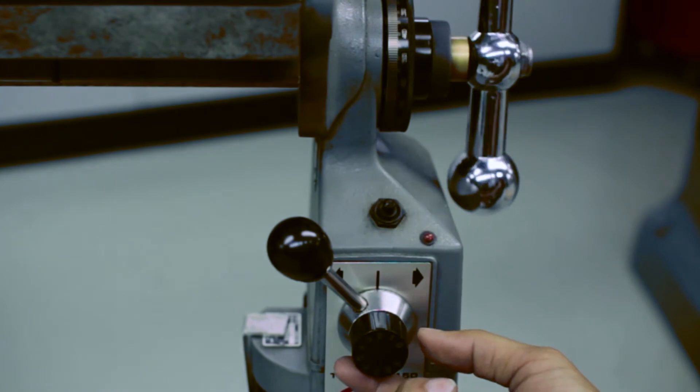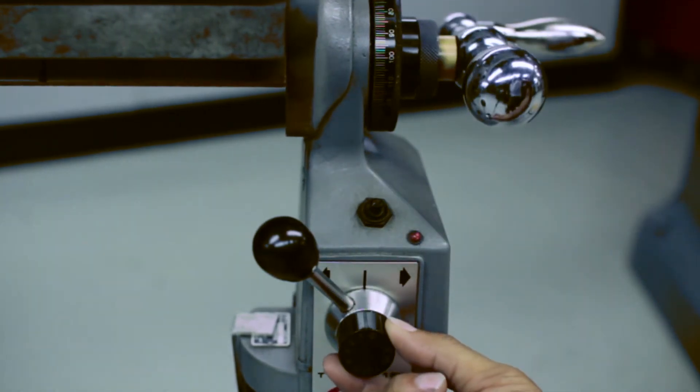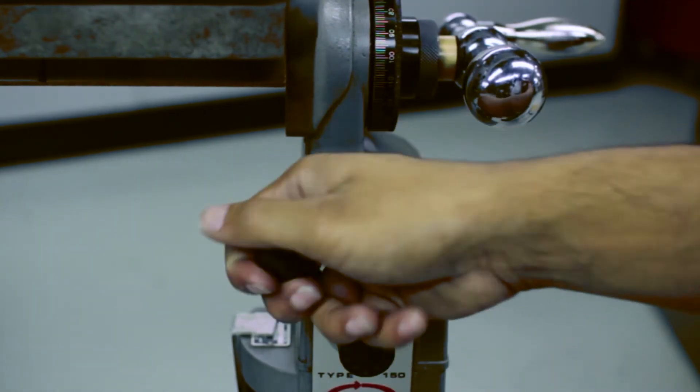When you are done with the power feed, rotate the speed adjustment knob to zero, and then turn the handle back to the middle.